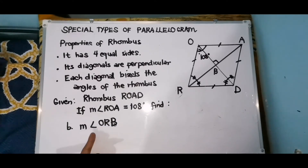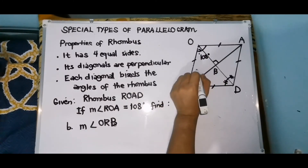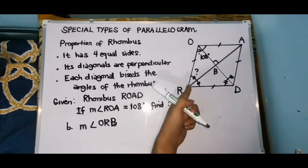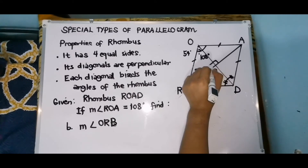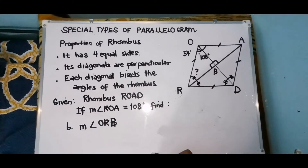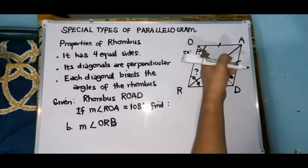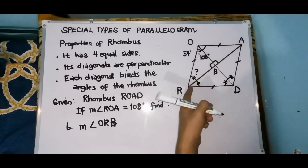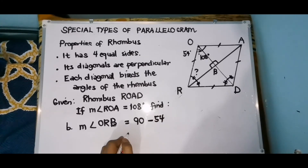For letter B, we need to find the measurement of angle ORB. Na-solve na natin na si ROB ay 54 degrees. Since eto ay 90 degrees, according to the second property its diagonals are perpendicular. So kung eto ay 90, thus etong dalawang angle na to ay complementary. So therefore, we just subtract 54 from 90 para makuha natin itong si ORB. That is 90 minus 54, therefore the measurement of angle ORB is 36 degrees.